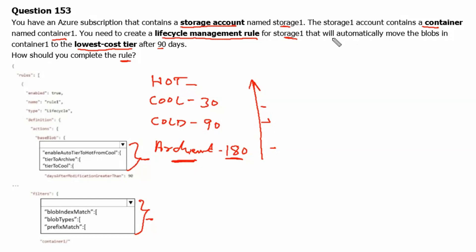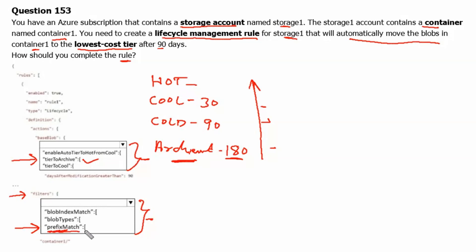Therefore, the data should automatically be moved to the archive tier after 90 days — tier to archive is the correct answer. For the next part, the filter to use to select container1 data is prefix match, and the value would be container1. Let's move to the next question.